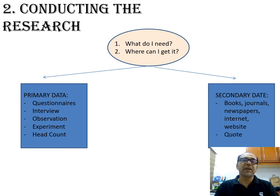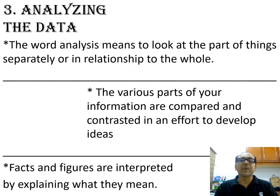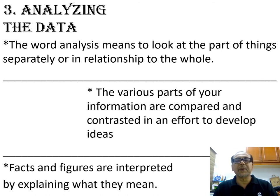If secondary data is similar to the information you need for your primary data and it has already been done, you use that secondary data in your report without needing to redo the research. Analyzing the data means to look at the parts of things separately and in relationship as a whole. The various parts of your information are compared and contrasted in an effort to develop ideas. You compare your data with other data — this process is called analyzing the data — and then you come up with facts and figures that are interpreted by explaining what you mean in your report.